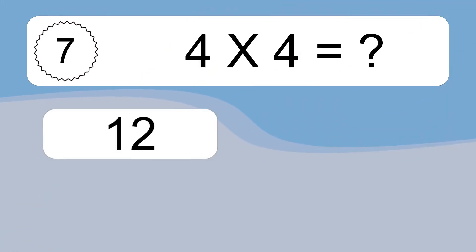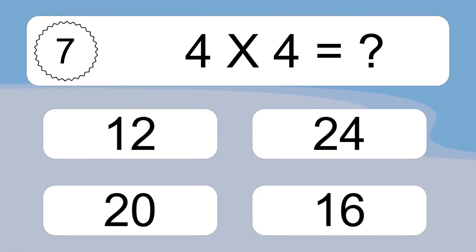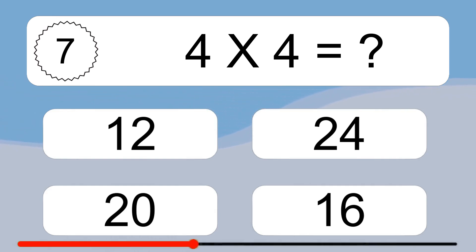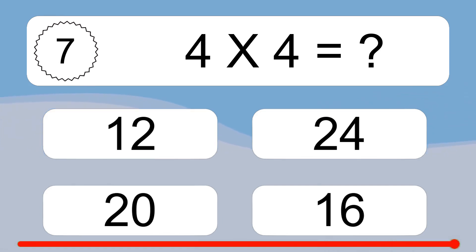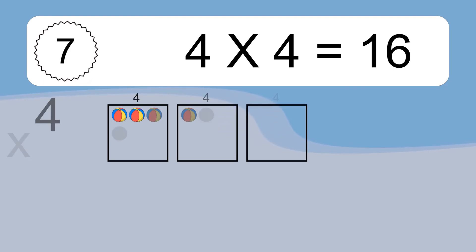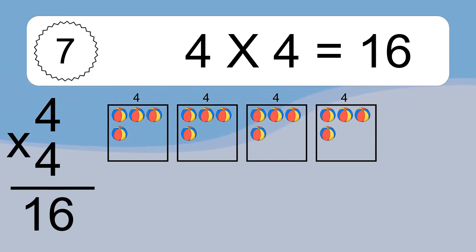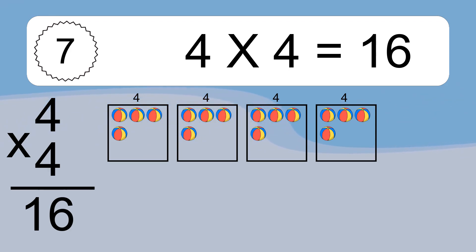4 x 4 equals what? 4 x 4 equals 16. We have 4 boxes, and each box has 4 colorful balls inside. If you count all the balls in all the boxes together, you will have 4 x 4 balls. This equals 16 balls.